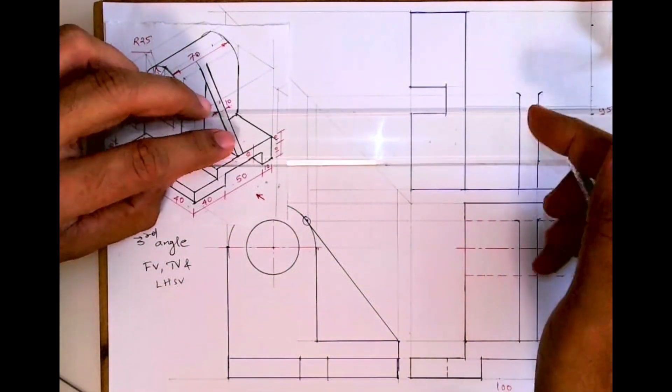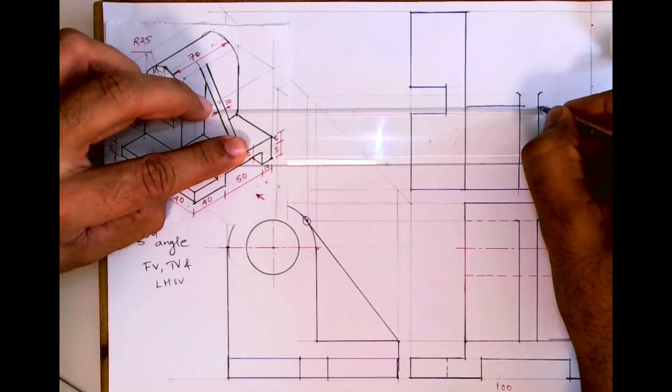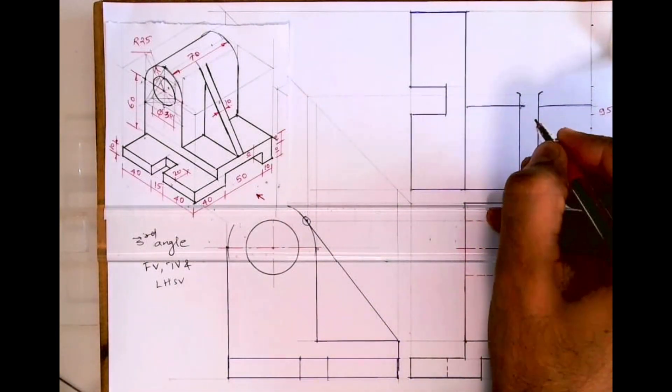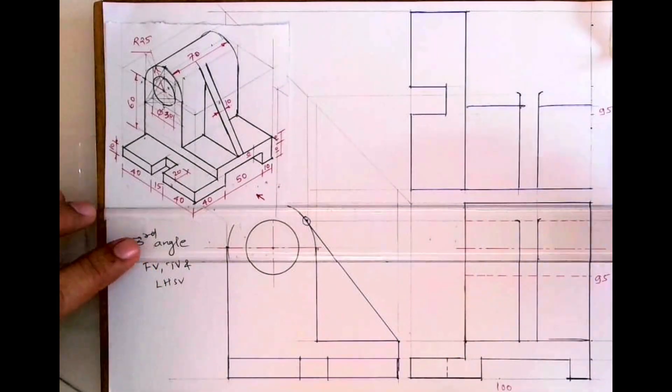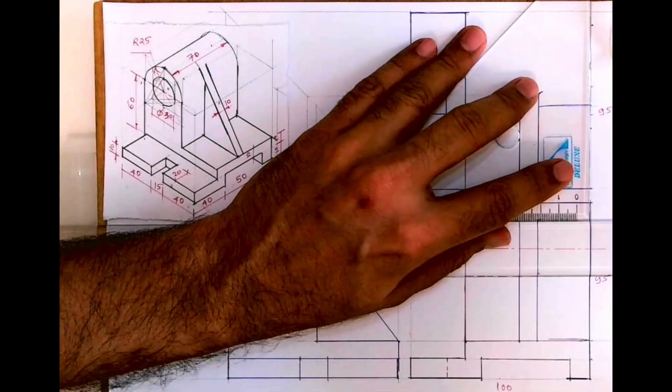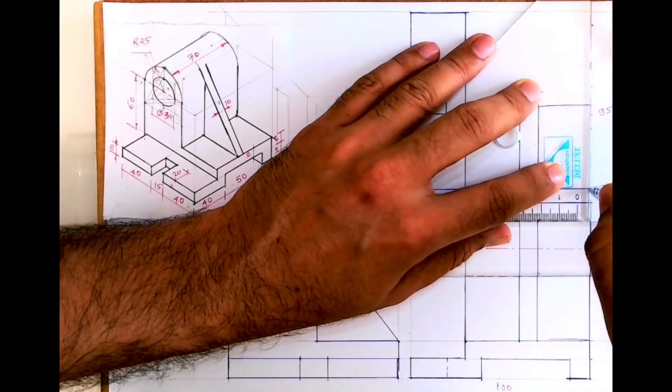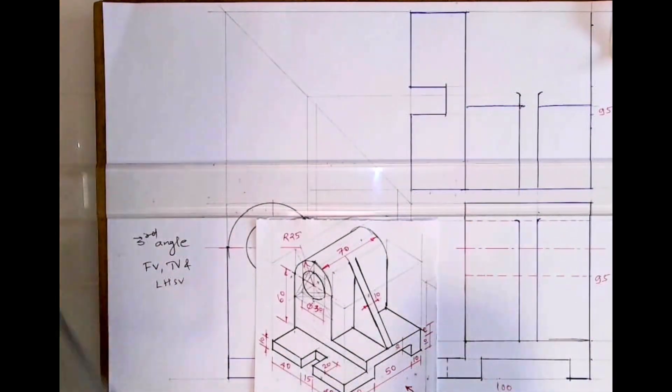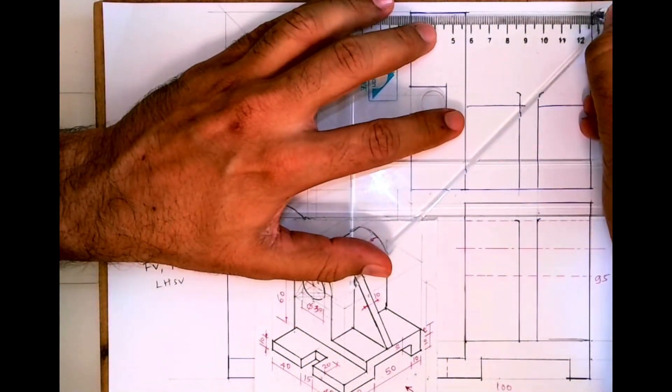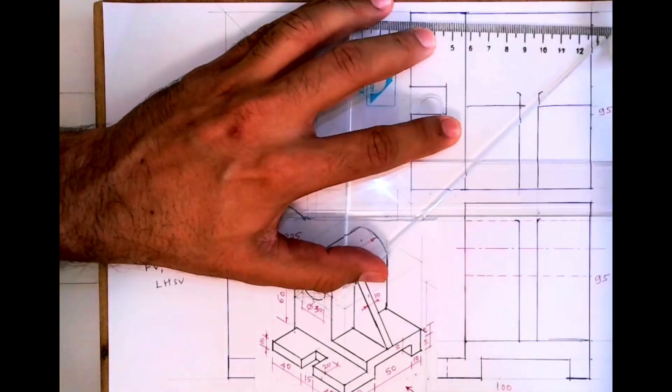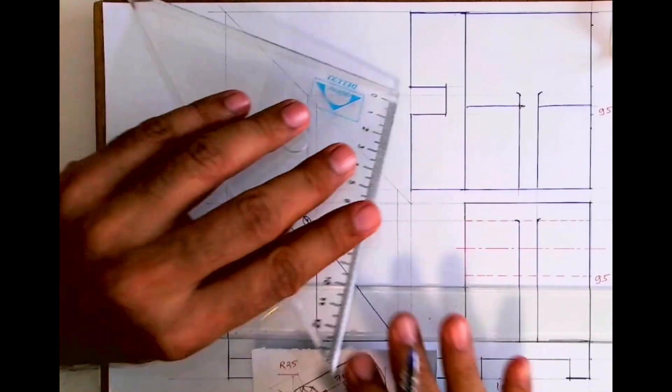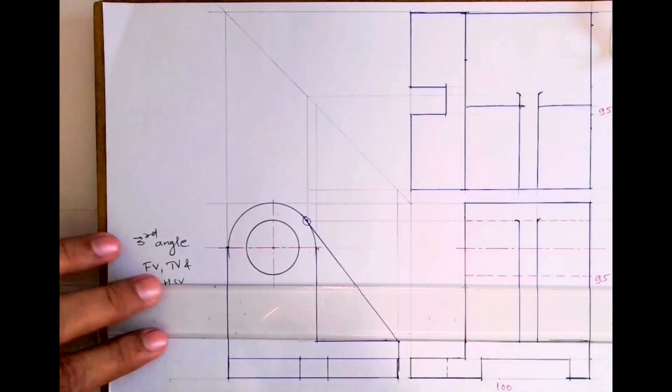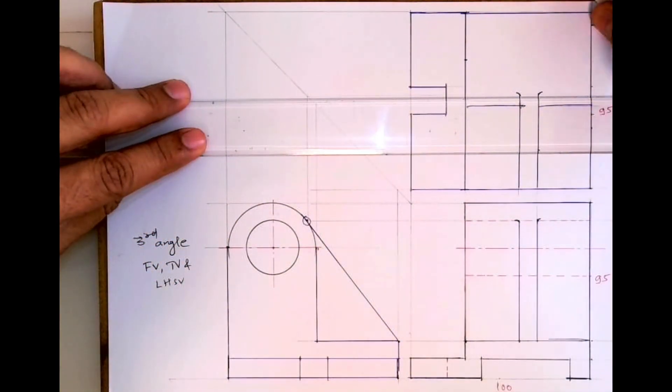This will be done, this much will be done, the middle portion will be done, the intersection will be done. After this we'll draw the extreme top portion, that will be done. Now we need to draw dotted for this circle, so we can find the center point. It is 50, so 25 is center point and we'll take 15, 15 both the sides, or you project from side view whatever you feel comfortable.